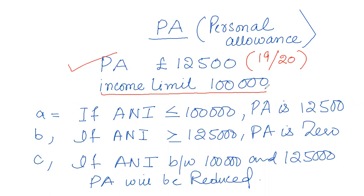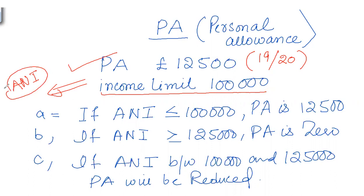The income limit refers to the adjusted net income (ANI). In order to check that limit, we first need to identify the adjusted net income. Rule number one: if adjusted net income is equal to or less than £100,000, then the full personal allowance is available.